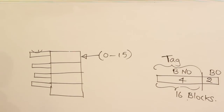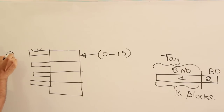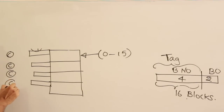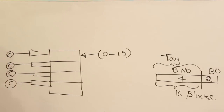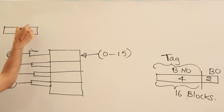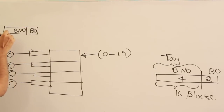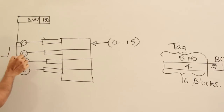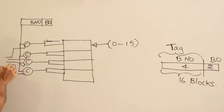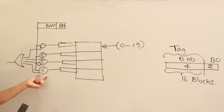The solution is instead of one comparator, we use N comparators — one per cache line. Each comparator is connected to the tag bits of a cache line. When a physical address arrives, it contains block offset and block number. This block number is presented in parallel to all comparators. All comparators compare simultaneously, and if any one of them says yes, it is a hit; otherwise it is a miss.